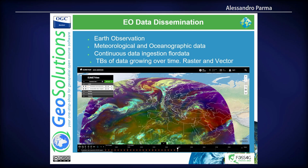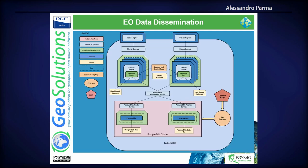We have a use case: a portal for meteorological and oceanographical data. We ingest a ton of data into the system — it stores terabytes of raster and vector data — and we implemented this with Kubernetes using containers. The performance is very good for this volume of data. This is a high-level view of how it's implemented underneath, similar to the architecture we've seen before. One difference is the PostgreSQL layer, implemented with an operator in Kubernetes — an on-premise cluster spun up directly into Kubernetes with a Helm chart.